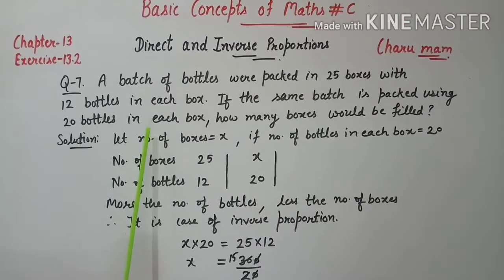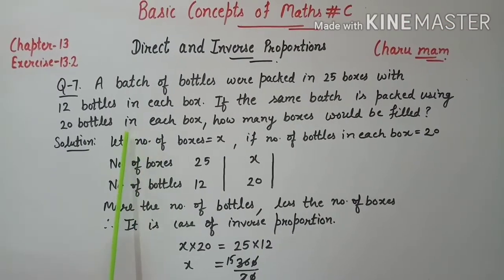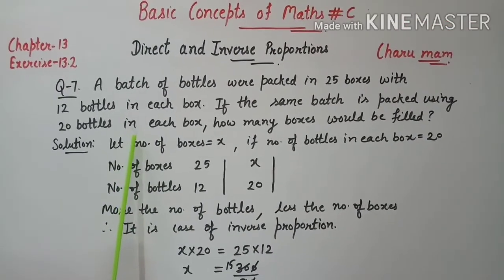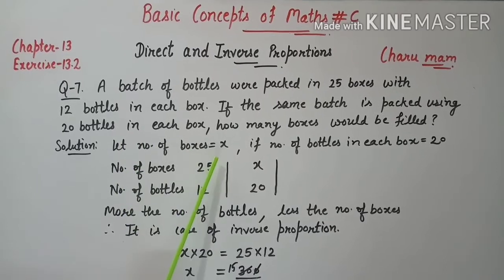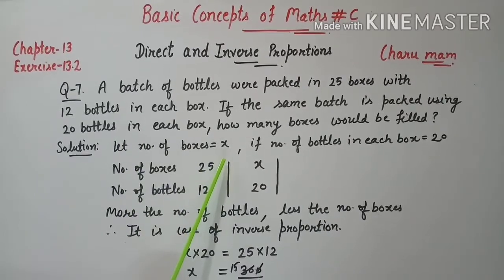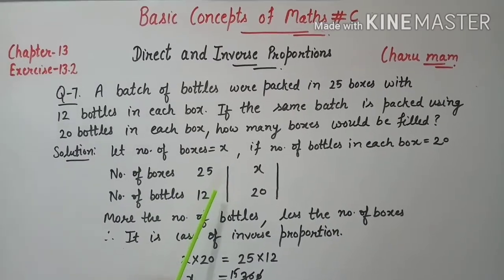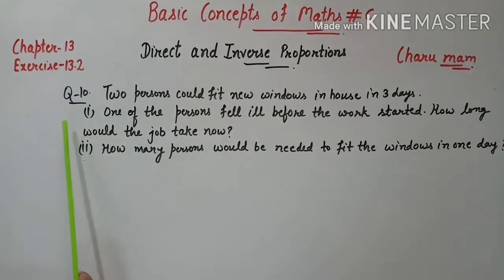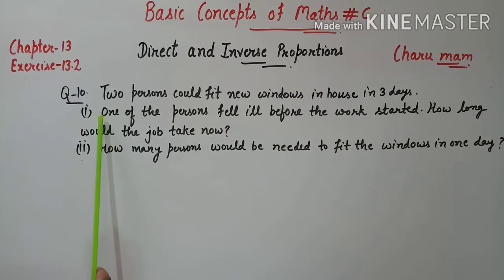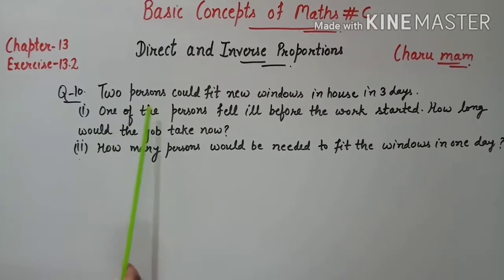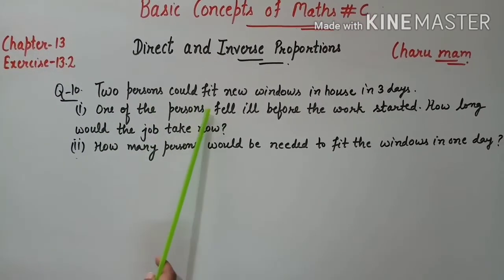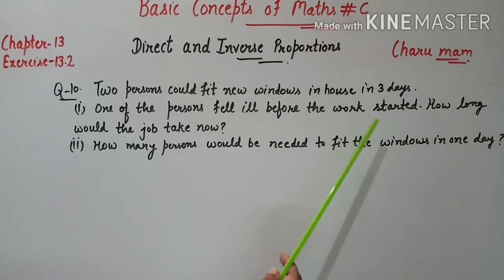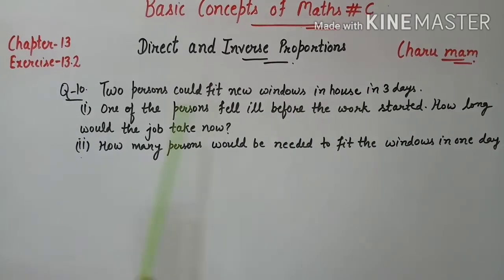We have discussed Question 6 and 7. Try Question 8 and 9 yourself, which are similar to the previous questions. Now Question 10: 2 persons could fit new windows in a house in 3 days.